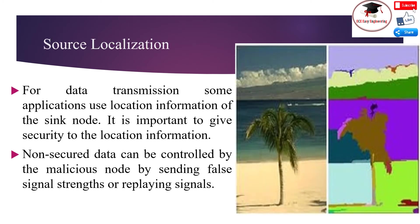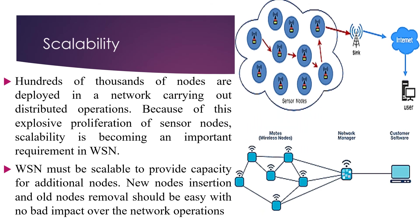Source Localization: Some applications use location information of the sync node for data transmission. It is important to secure the location information, as non-secured data can be controlled by malicious nodes sending false signals, strengthening, or replaying signals. Scalability: Hundreds of thousands of nodes are deployed in a network carrying out distributed operations. Due to this explosive proliferation of sensor nodes, scalability is becoming a critical requirement; new node insertion or old node removal should be easy with no adverse impact on network operations.